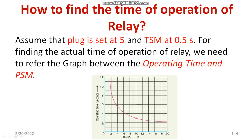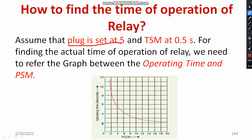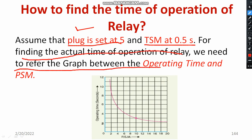Now let us familiarize some examples. Assume that the plug setting of the relay is 5 and TSM is equal to 0.5. You need to set these at the beginning — whether you are using an electromechanical relay or a numerical relay, you set PS and TSM. In an electromechanical relay, there is a nail-like structure for plug setting and a dial to adjust TSM. For finding the actual time of operation of the relay, we need to refer to the graph between operating time and PSM, so you should know what PSM is.